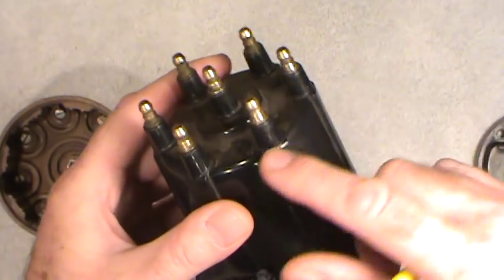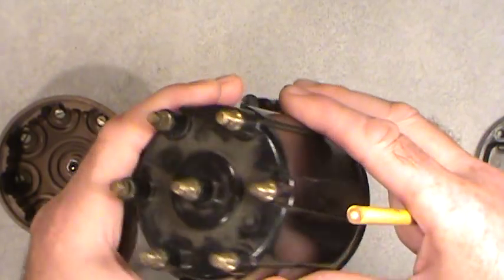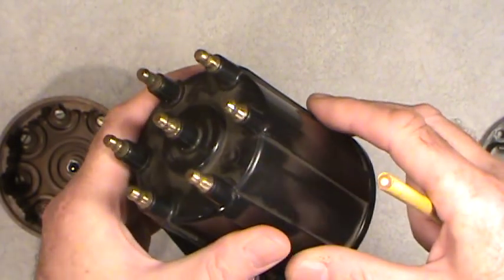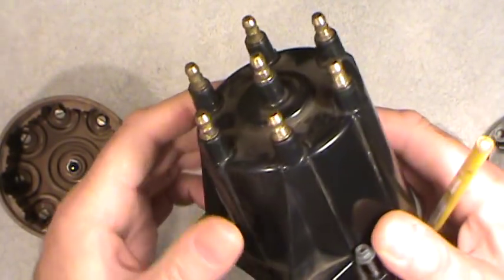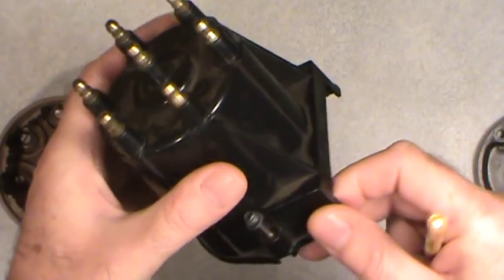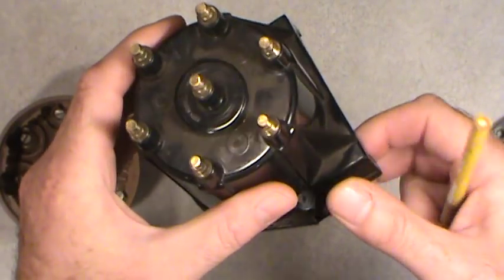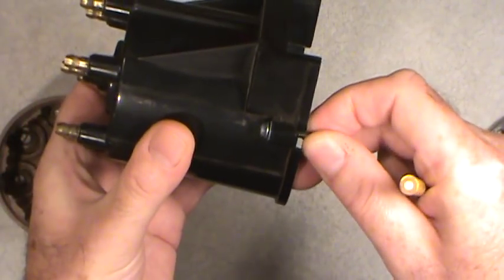So you are looking for any cracks. You don't want a distributor cap with any cracks in it. So you look on the whole thing outside, make sure that everything is looking and operating as it should. The screws, if they use the screw type.